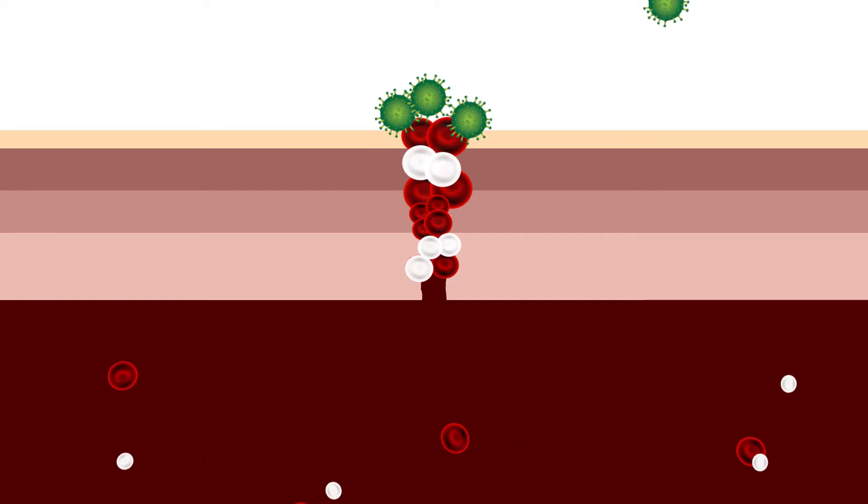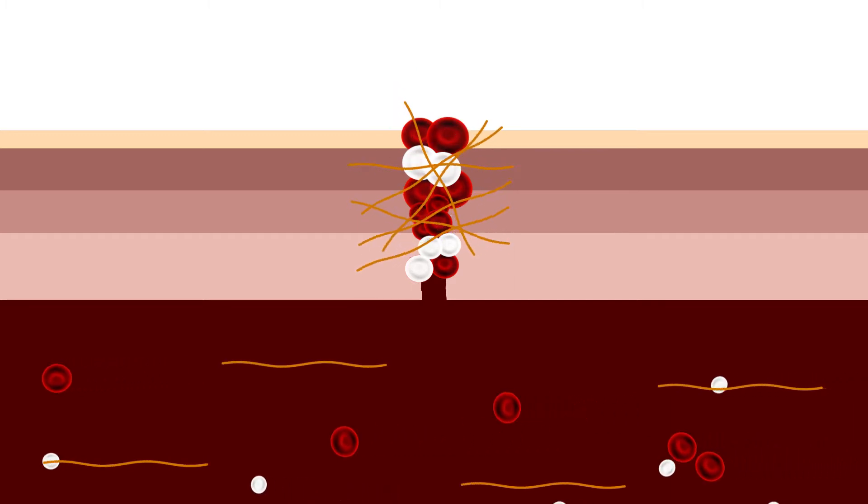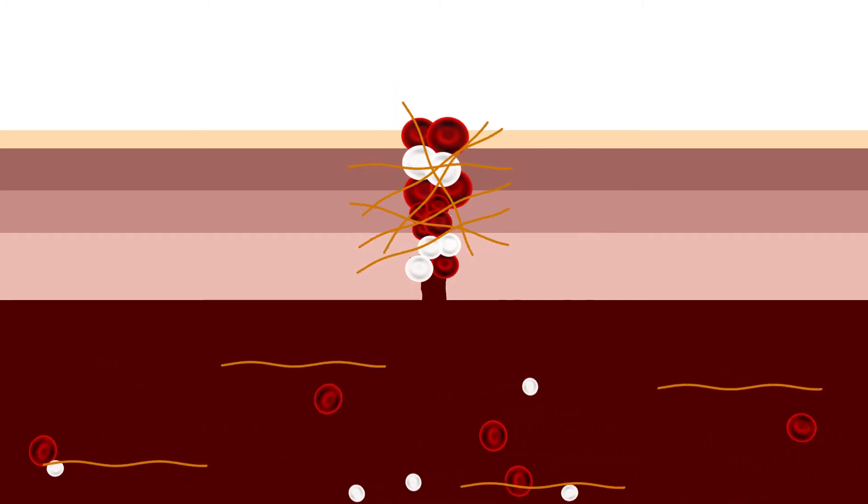This step is to stop the bleeding, so blood vessels constrict to restrict the blood flow, and blood cells called platelets clump together forming a blood clot, protecting the wound from any bacteria and preventing further blood loss. A special protein called fibrin acts as a blood glue and makes a net to hold the platelet plug in place. And now you have a scab over your wound.